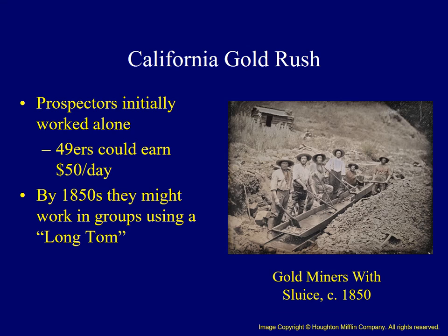At first, gold miners worked individually, each with a shovel and pan. According to some reports, these 49ers could earn $50 a day, equivalent to two months' wages for workers in the North. By the 1850s, devices like the one shown here — a long tom — were used where miners worked together in groups.